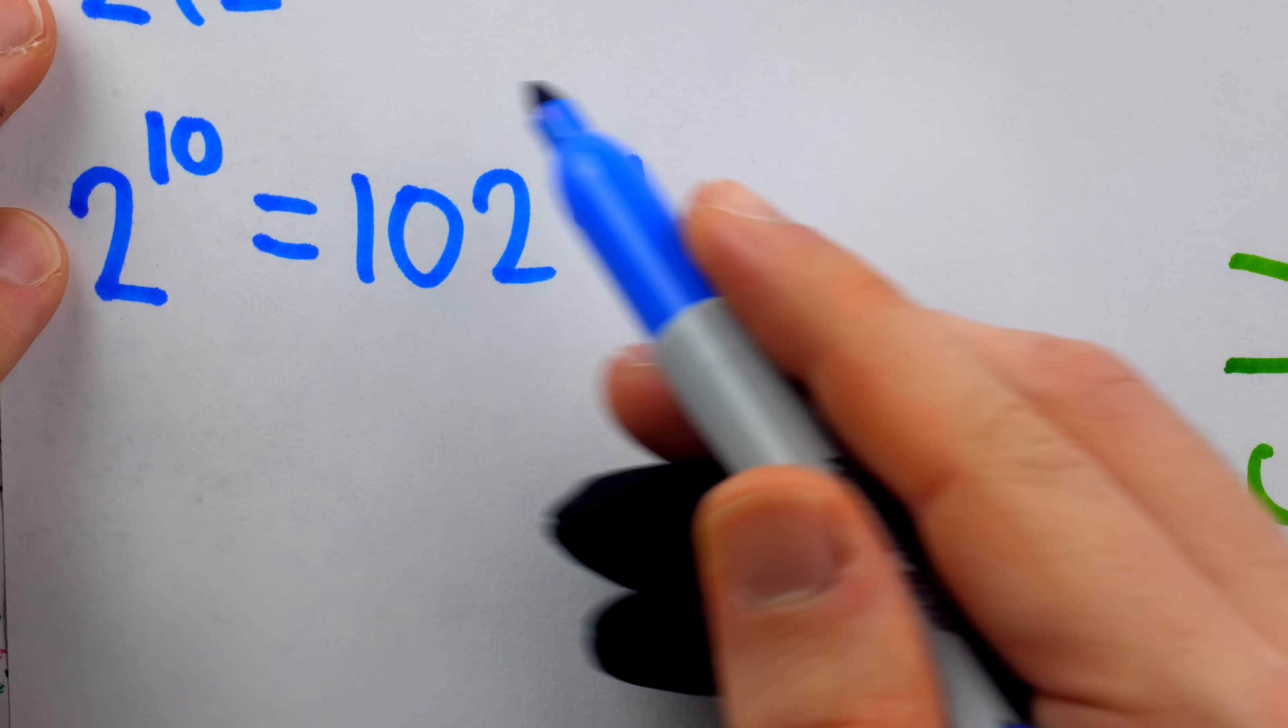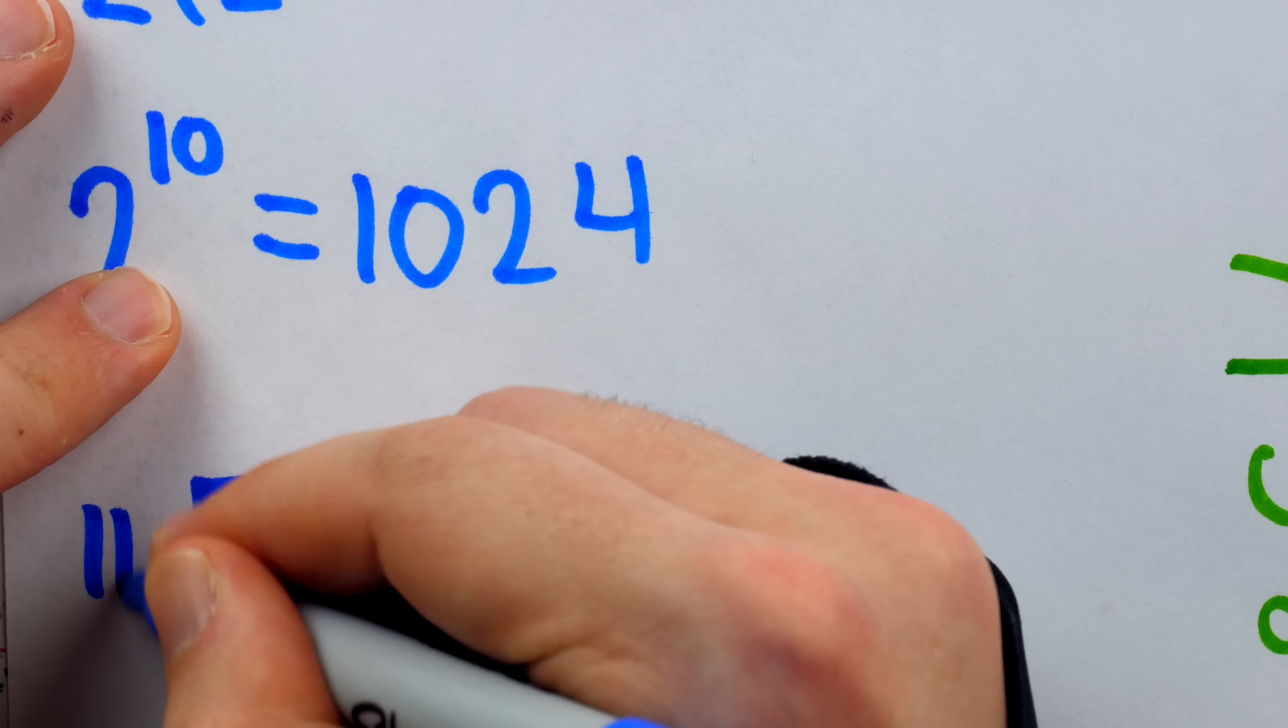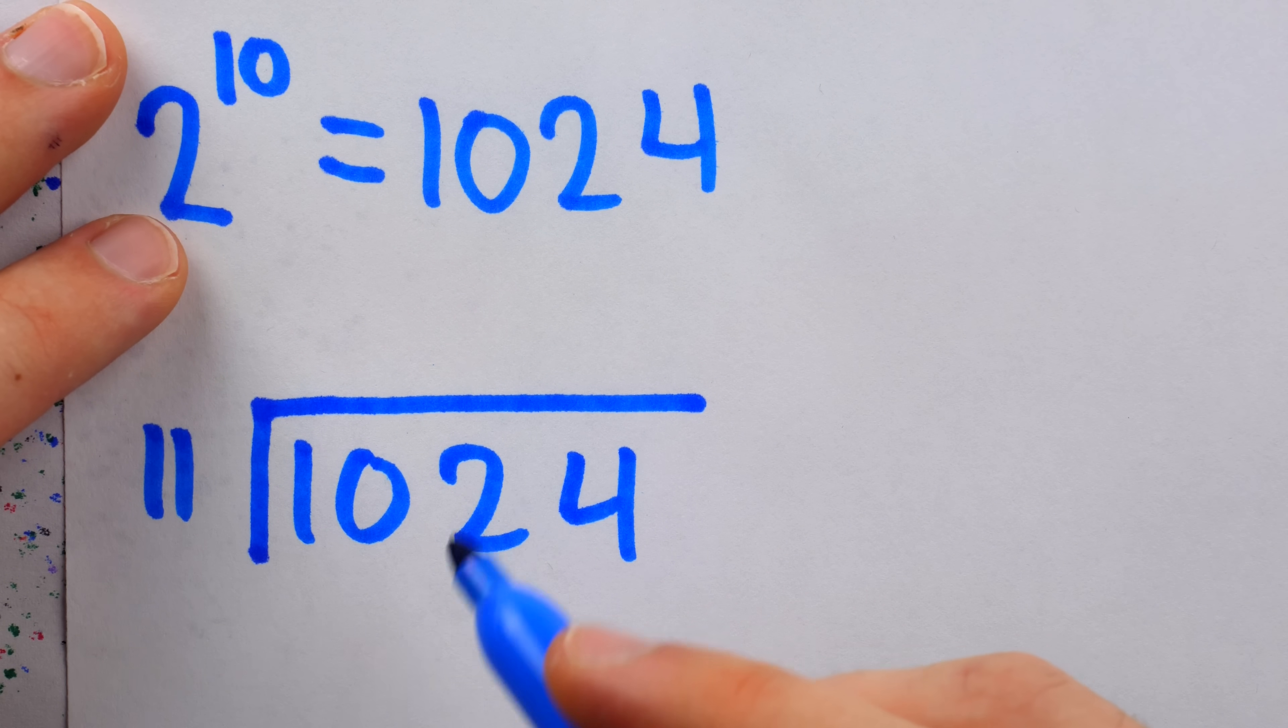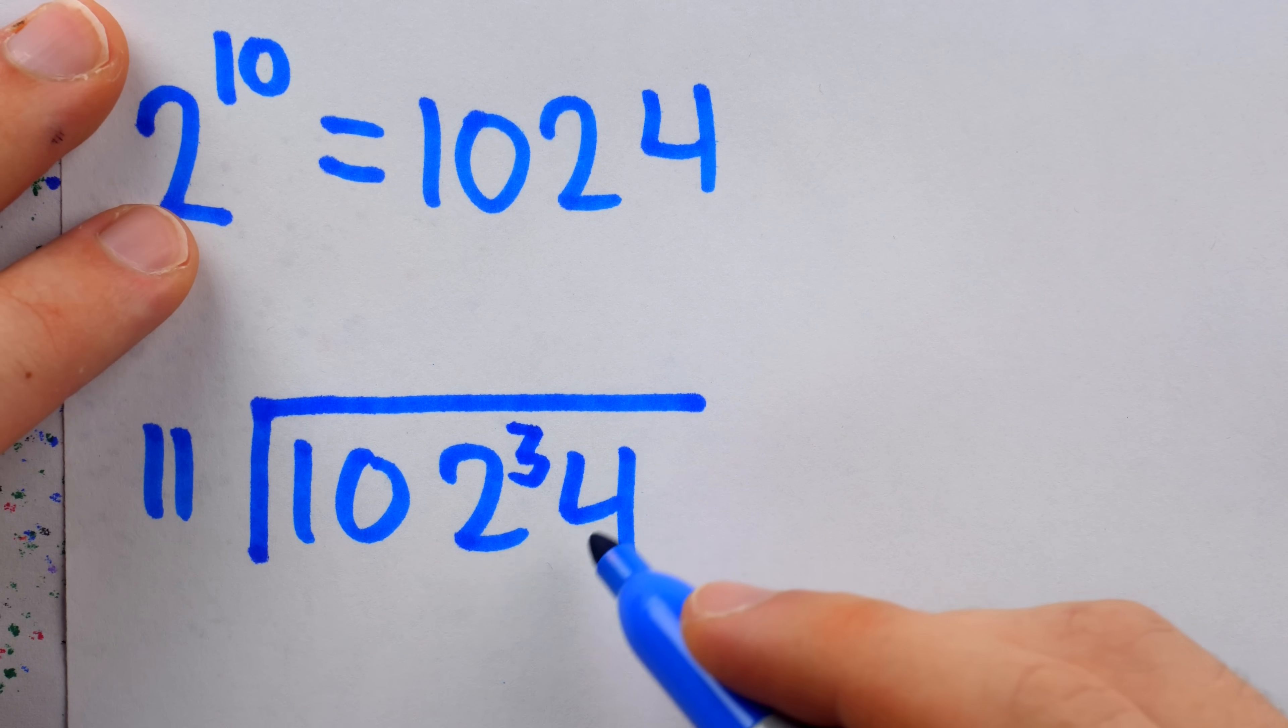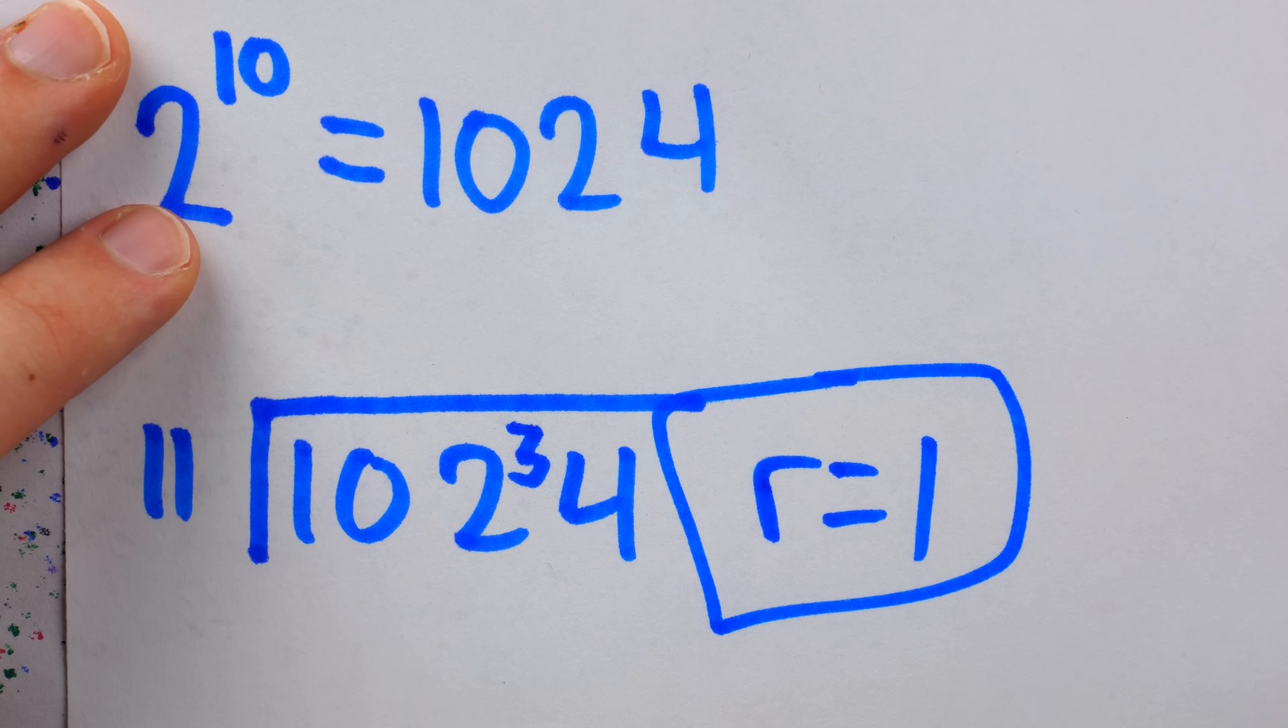So to find the remainder when 1024 is divided by 11, I'm just going to do some short division. Does 11 go into 1? No. Does 11 go into 10? No. Does 11 go into 102? Yes, 9 times with a remainder of 3. Does 11 go into 34? Yes, 3 times with a remainder of 1. Man, that is easy.